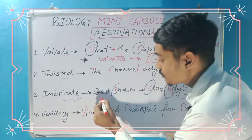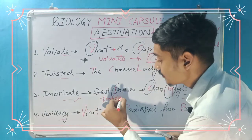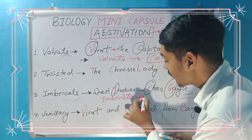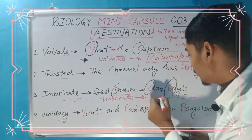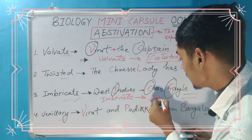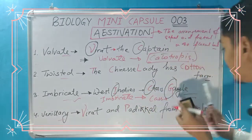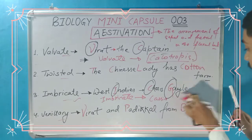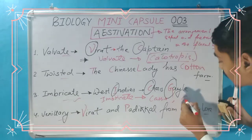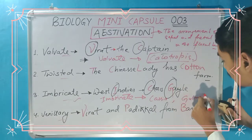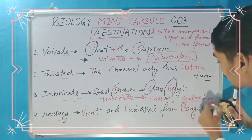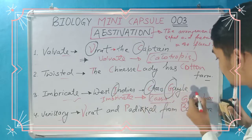So the imbricate examples are Cassia and Gulmohar. These two are the examples of imbricate.